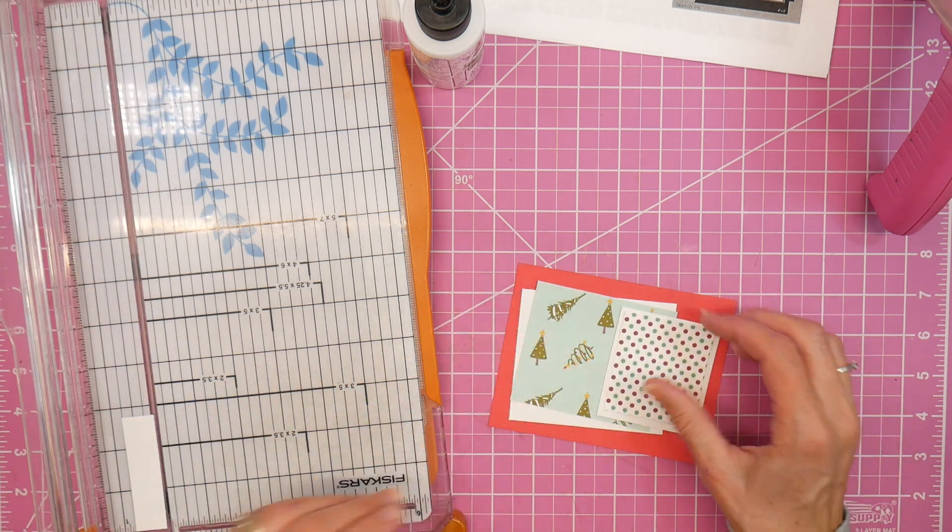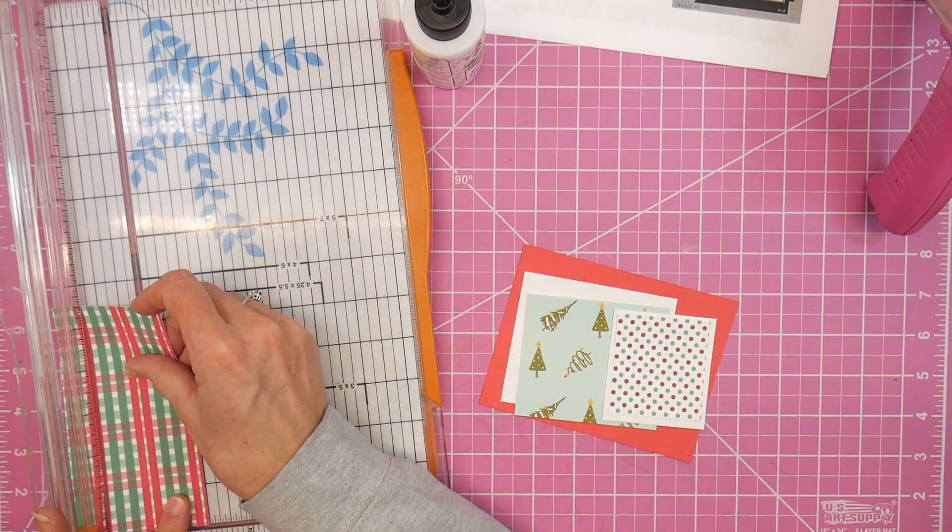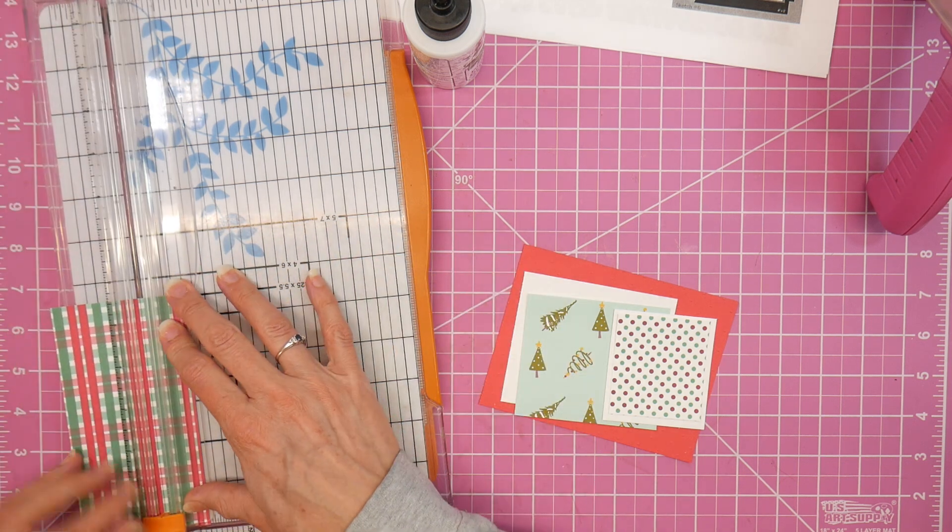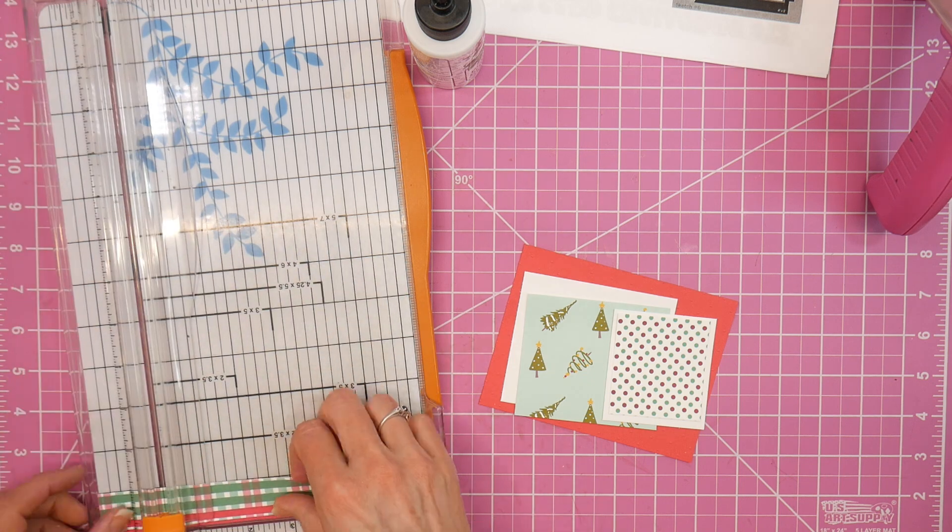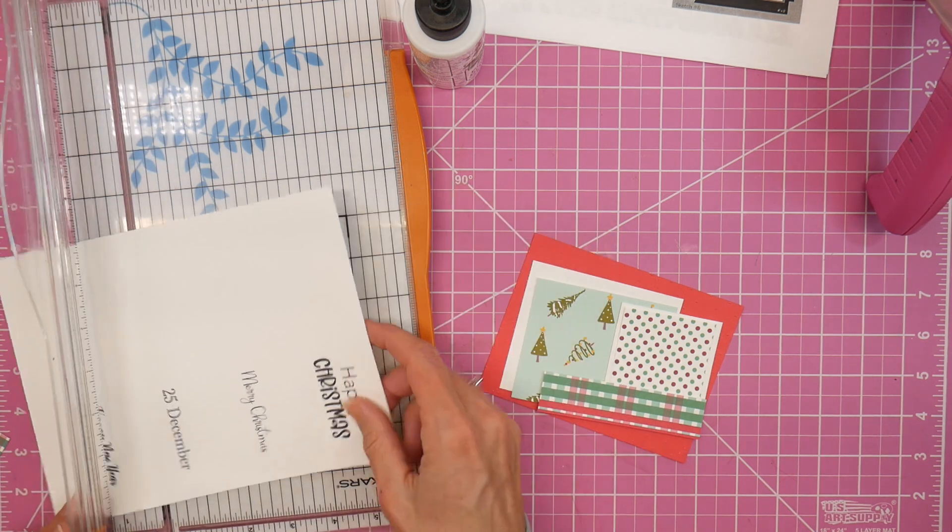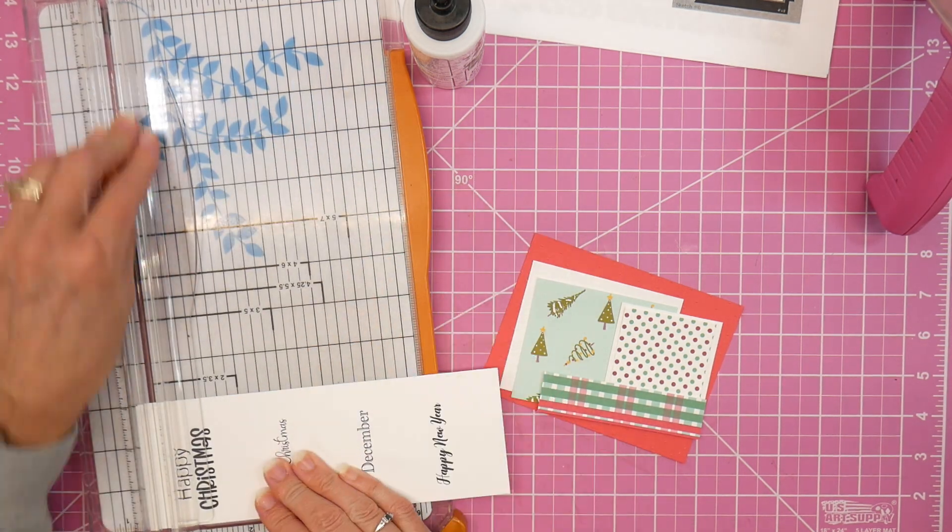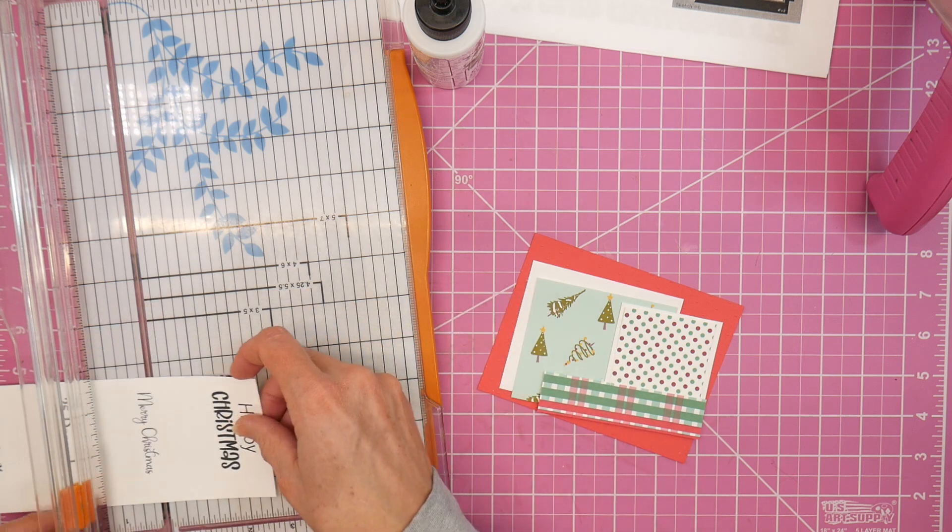One nice thing about Kendra's card challenges is you can do all of the cutting - you know, the cutting guides that she gives you - you can go ahead and do all the cutting and then make all the cards. Or if you only want to make a couple of the cards, each sketch does give you dimensions for all the pieces. So if you just want to make one or two cards like I'm doing today, you don't have to go through all of the cuts. You can just use the dimensions on the card sketch and cut each individual card that you need.